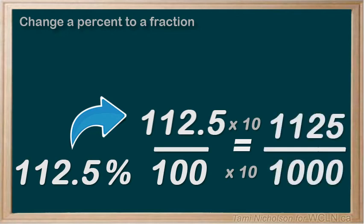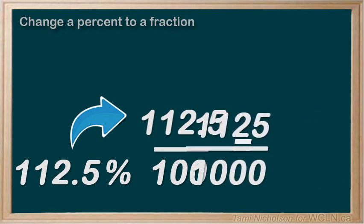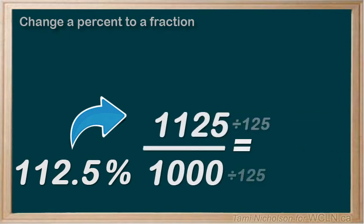Now you need to reduce it to its simplest form. Divide top and bottom by 125. You'll end up with nine-eighths. Change that to a mixed fraction. One and one-eighths. And you're done!